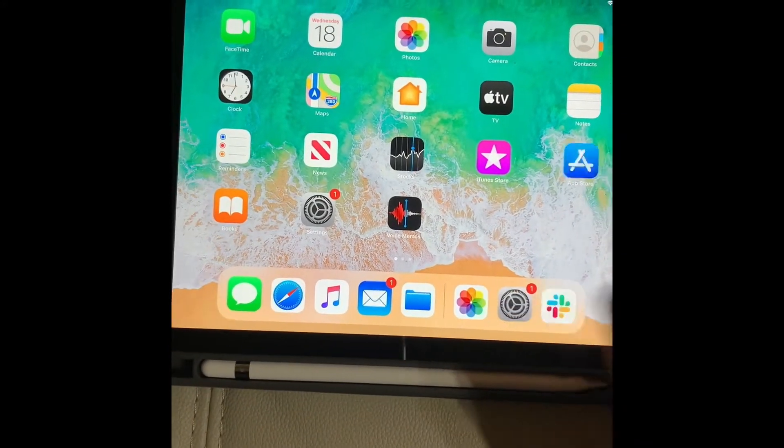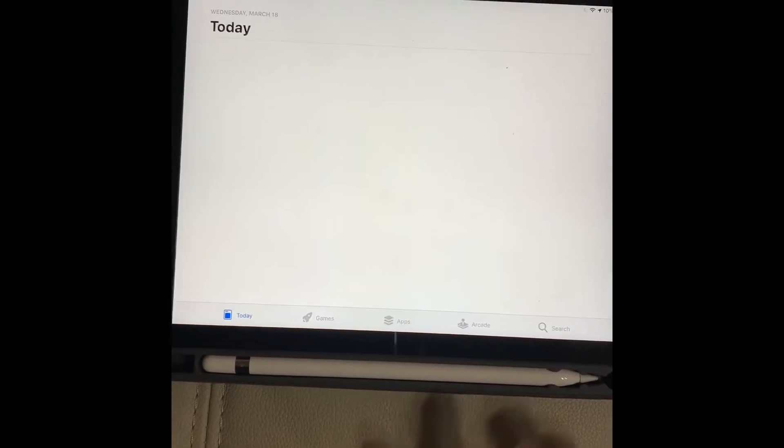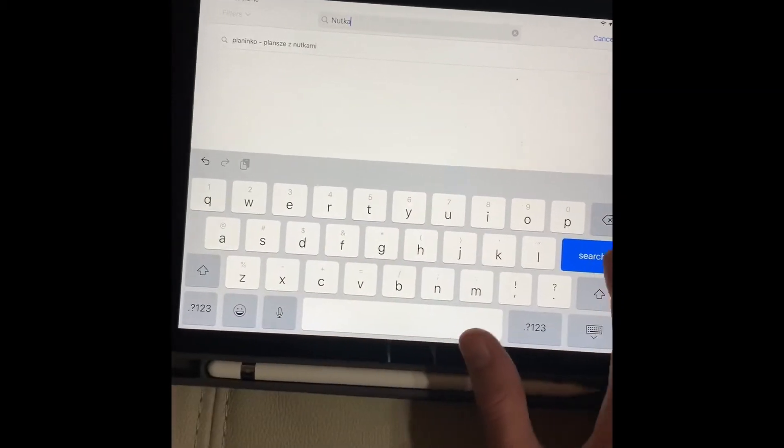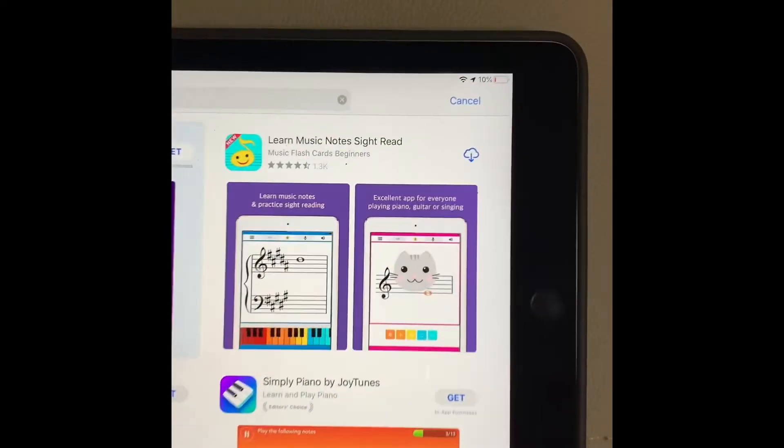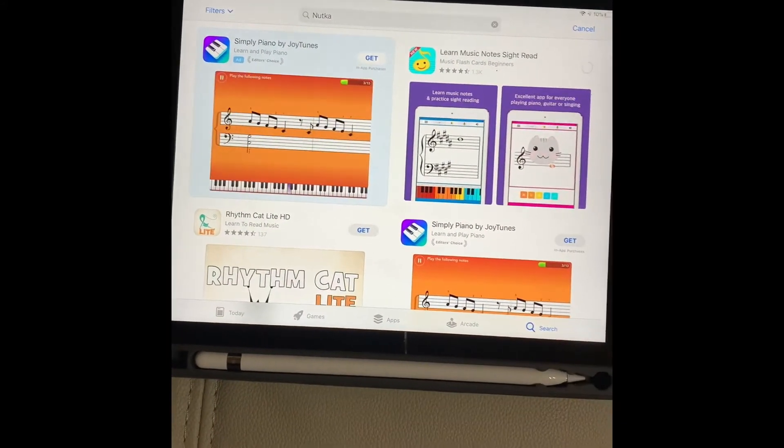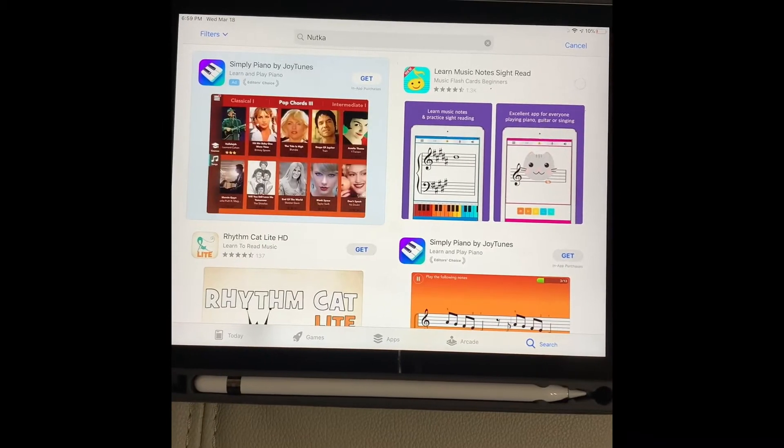So first we're gonna go to the App Store and then you're gonna search the app, N-U-T-K-A. It's this one right here, Learn Music Notes, Sight Read, and then you just click download. It should download relatively quickly.